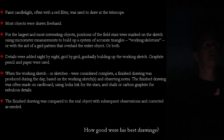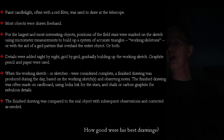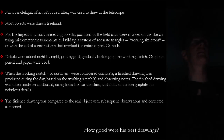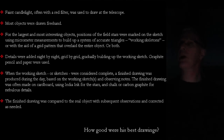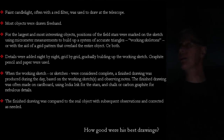When his working sketch was considered finished — and it was very common in the 19th century for an astronomer to make a series of studies of an object, much like a painter would of a subject — the finished drawing was made on cardboard using Indian ink for the stars and chalk or carbon graphite for the nebulous details. After that was done, he went back to the telescope and compared the finished drawing to what could be seen through the eyepiece to make any last-minute adjustments.